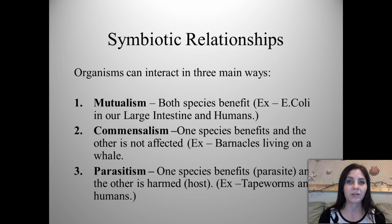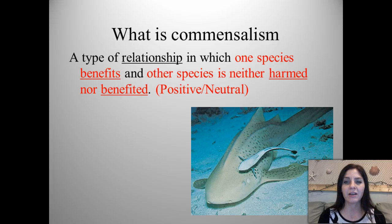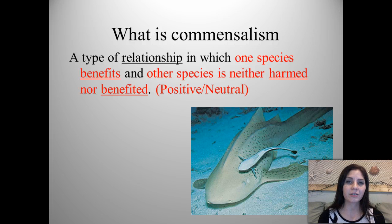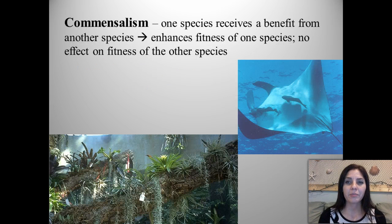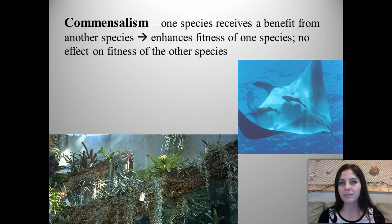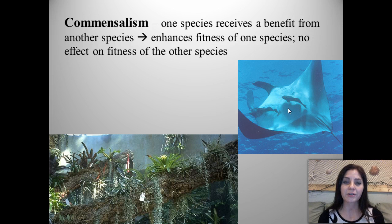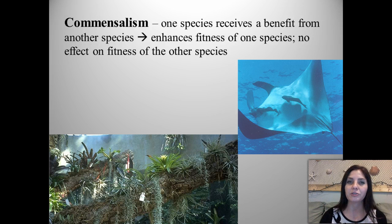Commensalism is a type of relationship in which one species benefits and the other is neither harmed nor benefited. We represent this by a positive-neutral sign, or plus-zero. The species that receives the benefit has enhanced fitness, and it does not help nor harm the other. For example, different types of fish hitch rides on manta rays — they don't have to expend as much energy swimming; they ride the current with the manta ray.